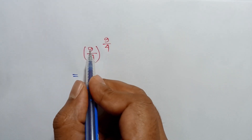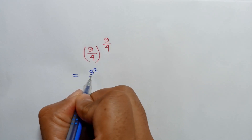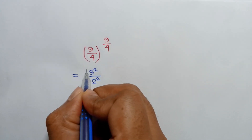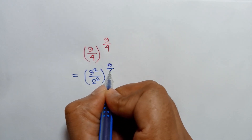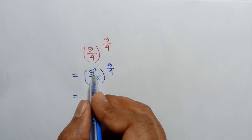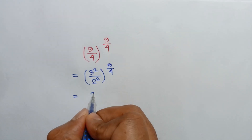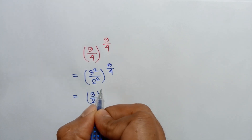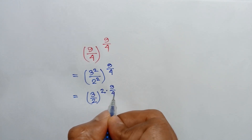9 over 4, whole to the power 9 over 4 is equal to: 9 can be written as 3 squared, over 4 can be written as 2 squared, whole to the power 9 over 4. This equals 3 over 2, whole squared, times 9 over 4.